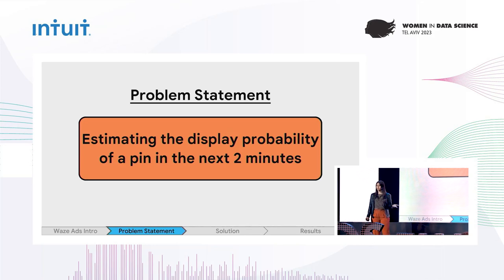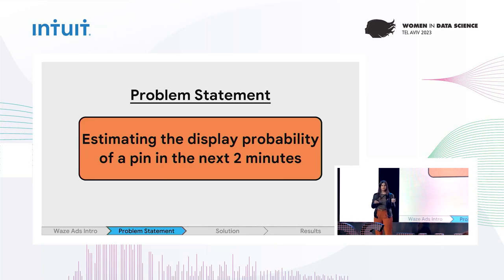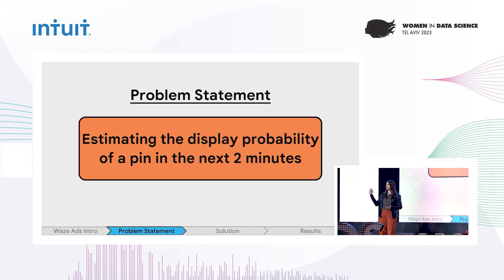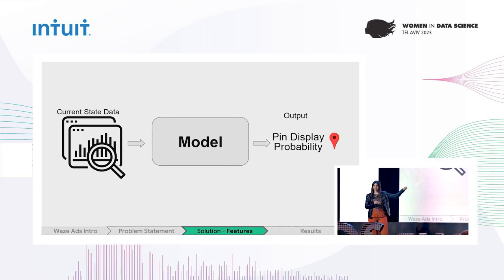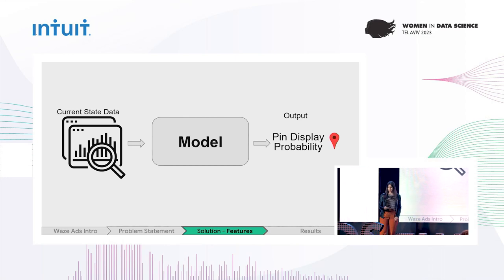So let's state clearly what the problem is. We want to be able to estimate each pin's display probability in the next two minutes — the probability that it will fall within your screen boundaries. If we're able to do it, we can rank them accordingly and then display many more pins on the Waze map, deliver much more value to our advertisers, and increase Waze revenue. The solution should take the current state at the beginning of these two minutes as data input, put it into some model, and output a display probability for every pin.